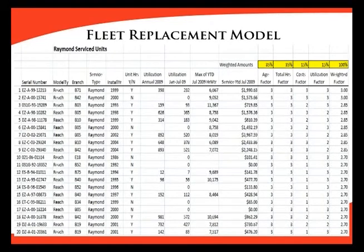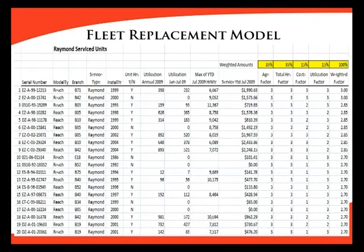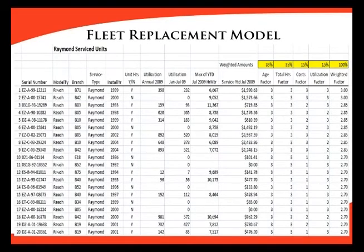We then resorted the list by total hours factor and again assigned one, two, or three based on where the trucks fell. The lower hours on the truck — the more desirable — got a factor of one; the most hours got a three; the middle third got two. The cost factor is somewhat counterintuitive: trucks that had received repairs were viewed as more desirable, since the expectation was that similar-age trucks would require similar repairs. We've already invested in these, so they're less likely to fail and received ones, while trucks with no money put into them got threes. For utilization, trucks the operation depended on with high utilization were desirable and got one; low utilization got three; the middle third got twos.